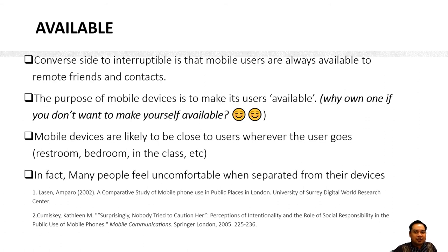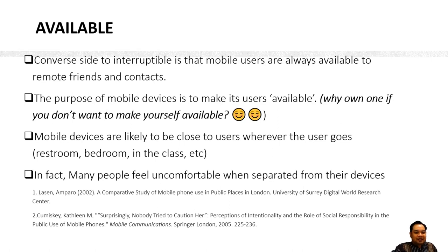When you buy a mobile device, it means you want to make yourself available to your friends or family. This is an important characteristic when designing a mobile application — the application must assume that the user wants themselves to be available. Mobile devices are likely to be close to the user wherever they go, such as in the restroom, bedroom, or class, and while traveling.